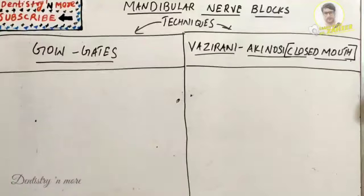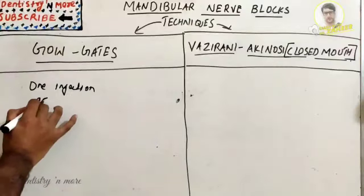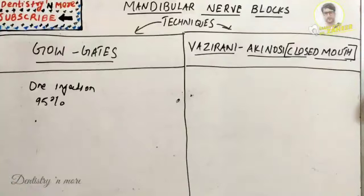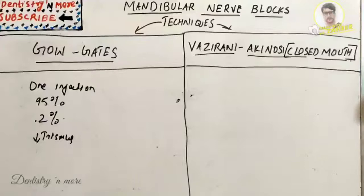The main advantages of Go-Gates technique are that it requires just one injection, has a high success rate of 95%, a very low aspiration rate of 2%, and fewer post-injection complications such as trismus.